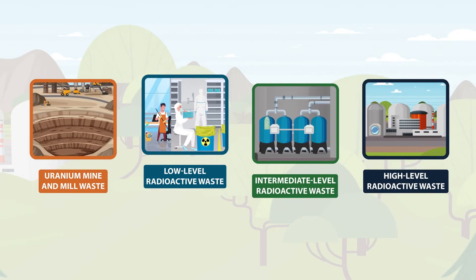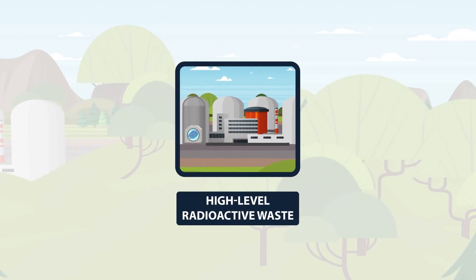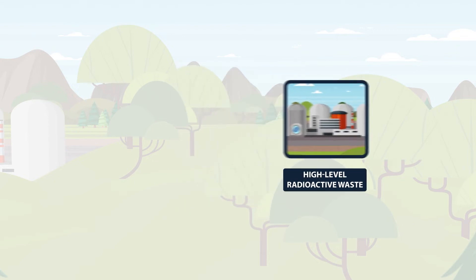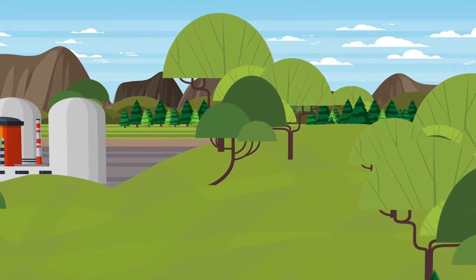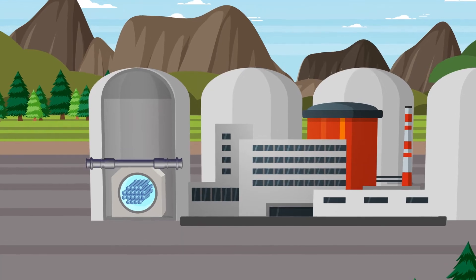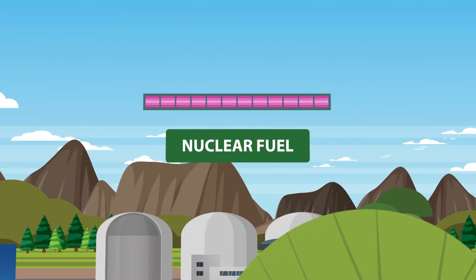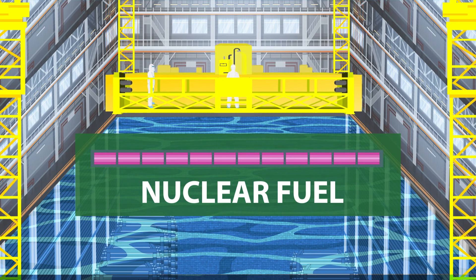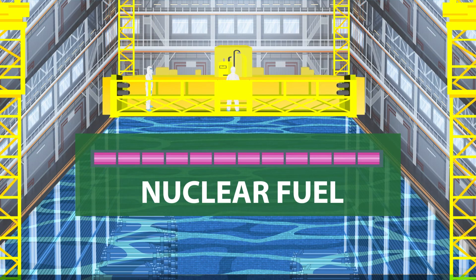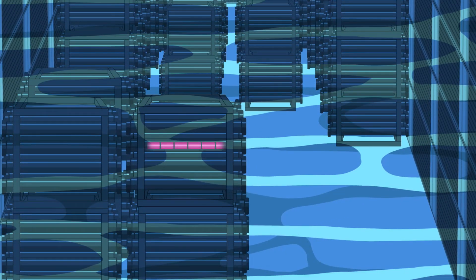Lastly, we have high level radioactive waste, which is primarily used nuclear fuel, along with small amounts of waste that generate significant heat and radioactivity. It requires long-term isolation. Nuclear power plants, prototype and research reactors, and test facilities produce high level waste. It comes in the form of used nuclear fuel that is still significantly radioactive.